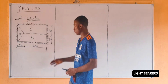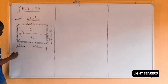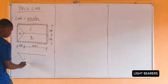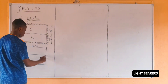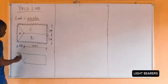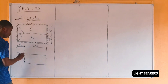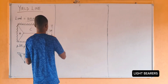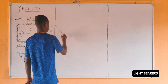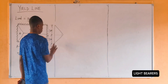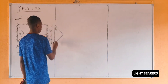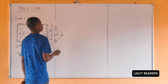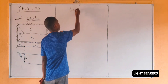First of all, let's draw the collapse mechanism of the slab. Here is theta A, and here is delta. Here is theta C, and here is theta B — delta remains. Tan theta equals theta.